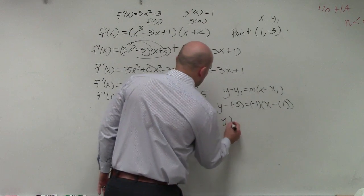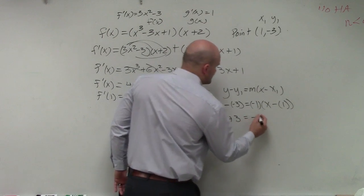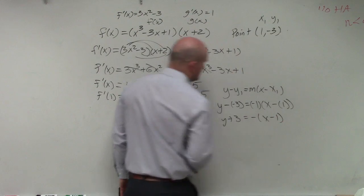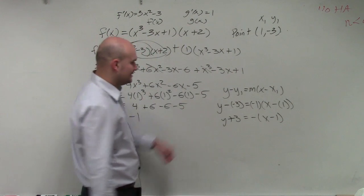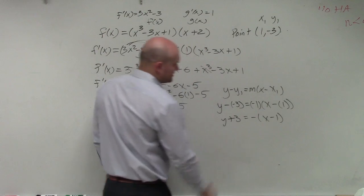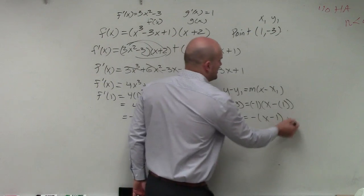You could obviously simplify this: y plus 3 equals negative x minus 1. And then you could even get that to the other side if you'd like to. But let's just leave it as that so we don't make any more mistakes.